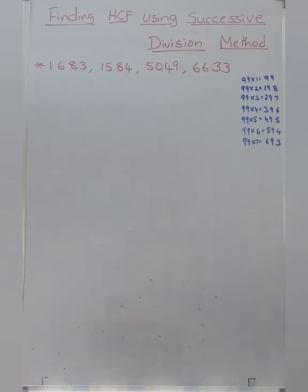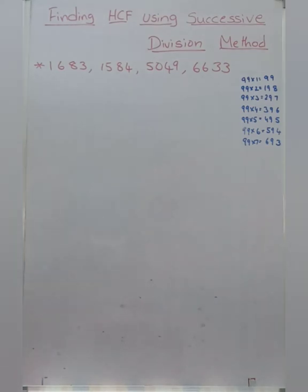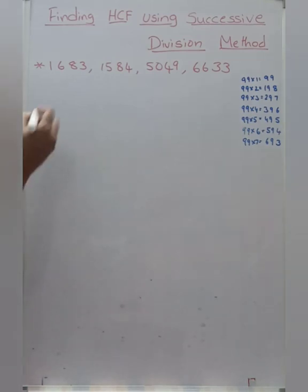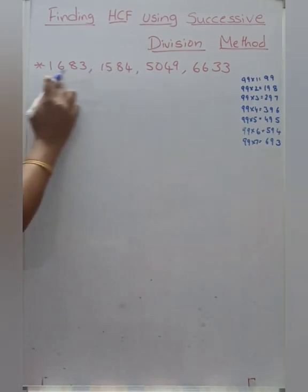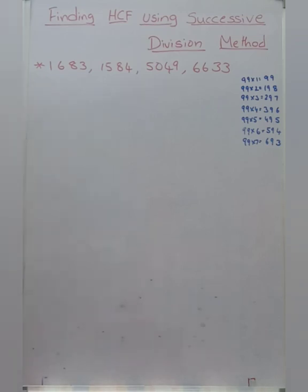Hi everyone, today we are learning finding HCF using successive division method. Here a problem is given, it has 4 numbers. For our convenience, we have to take the first 2 small numbers. Those are 1584 and 1683.